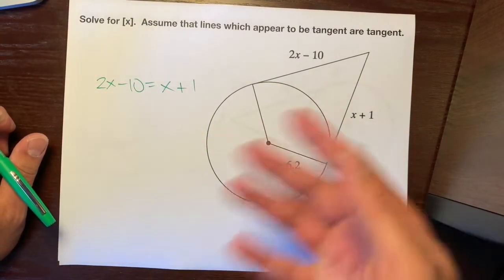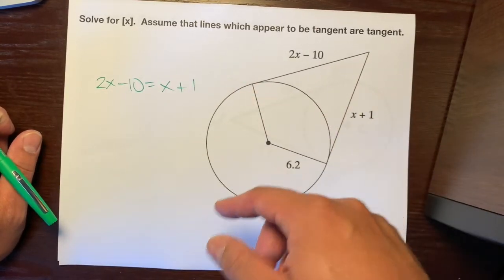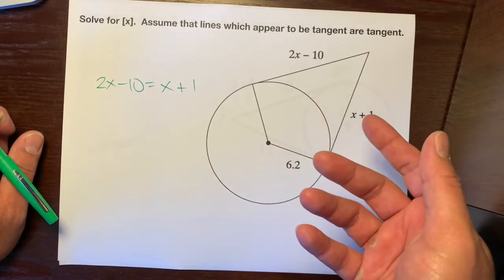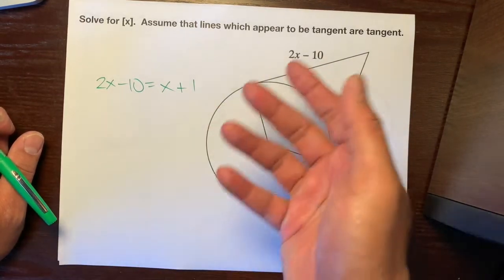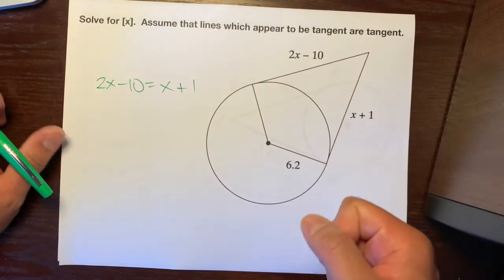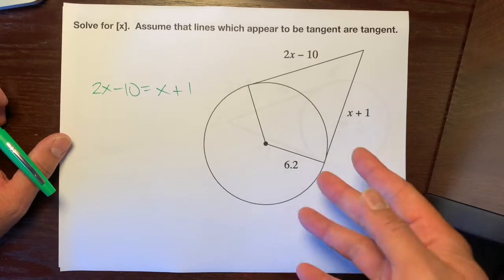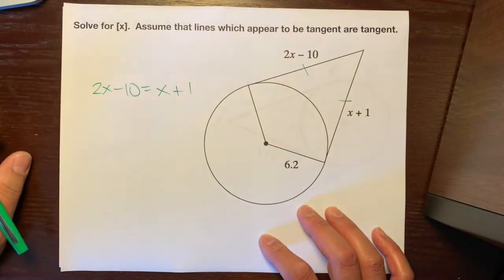And if you're wondering, hey, how do you know that they're congruent to each other, watch the previous video, and I'll show you the proof of the two tangents theorem. If not, just take my word for it. But just for your own sake, watch the video, because it'll make you smarter, and you want to be smart. So yeah, we can set these two equal to each other because of the two tangents theorem.